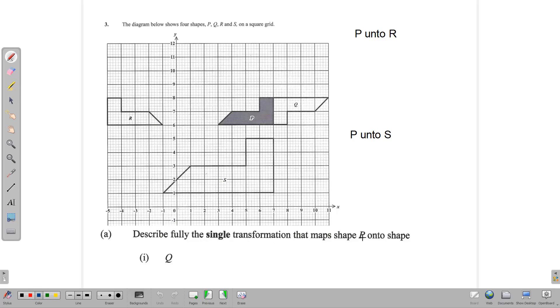Describe fully the single transformation that maps P onto Q. So the question is, how does this shape get onto this shape? The transformations we're used to are reflections, translations, rotations, and enlargements. Looking at this one, translation is a push or pull. An enlargement makes something bigger or smaller, and reflection creates a mirror image. This P and Q here, this is not a mirror image, and it certainly didn't push away. What it does look like is that it has been rotated.